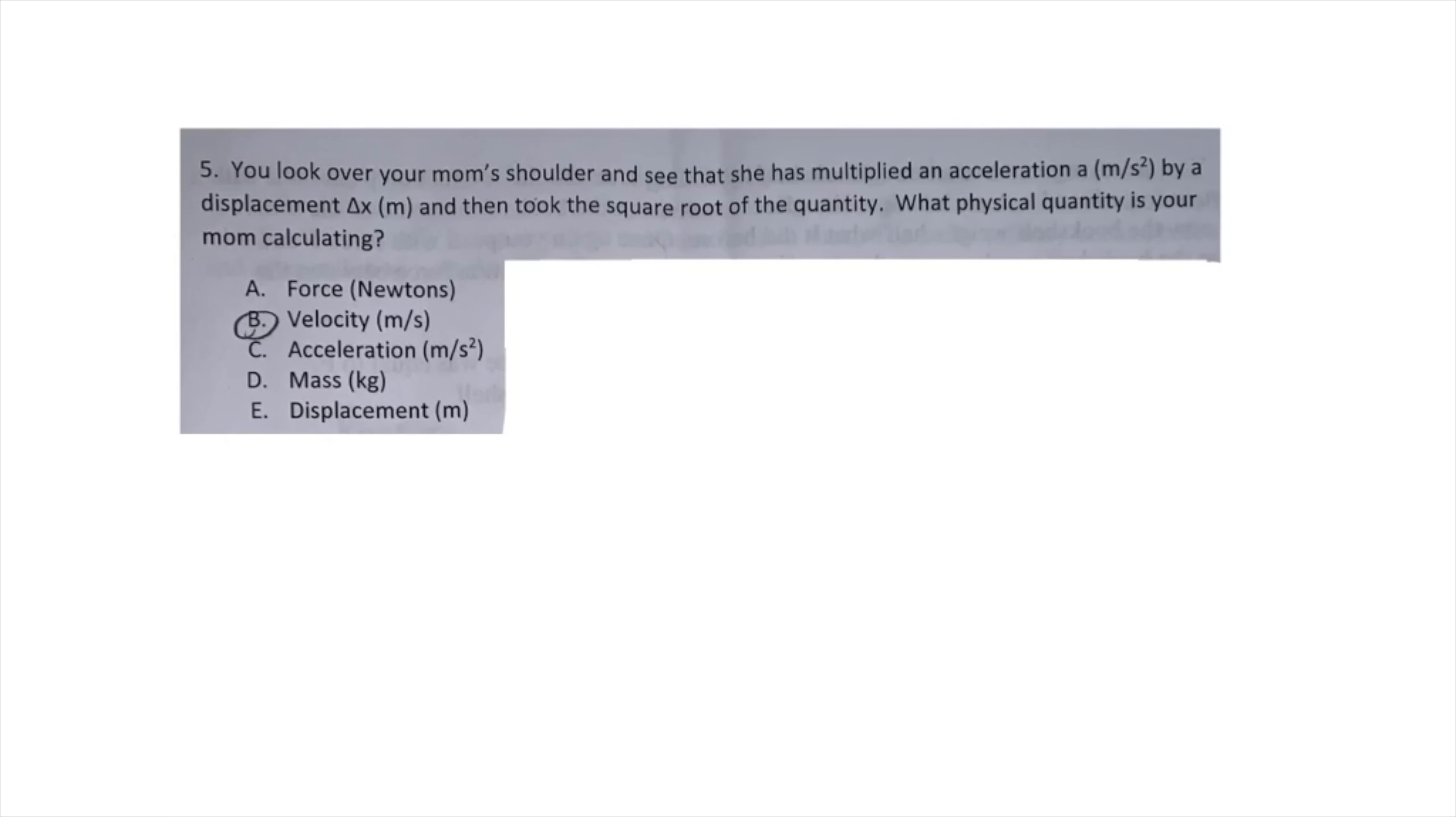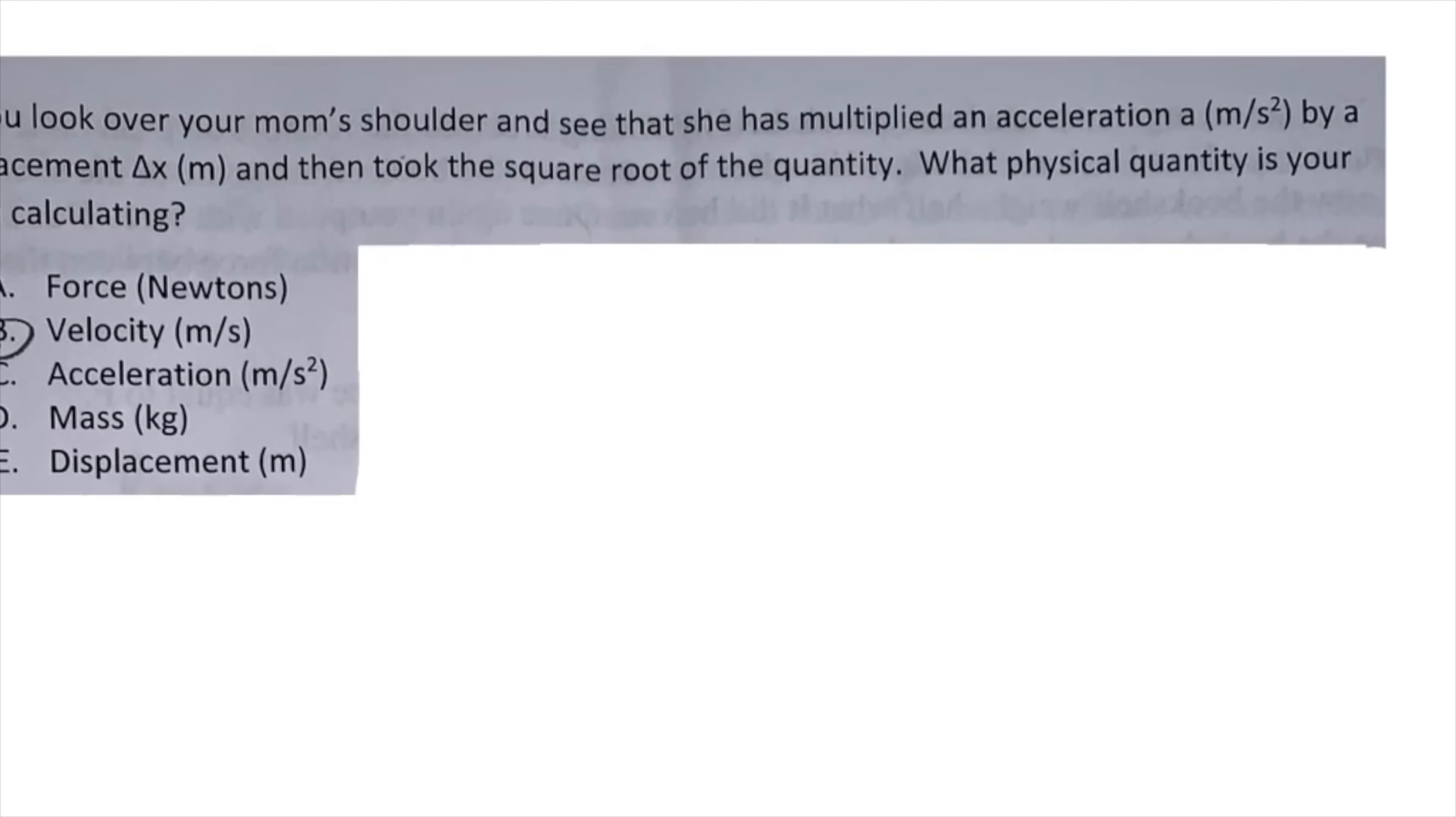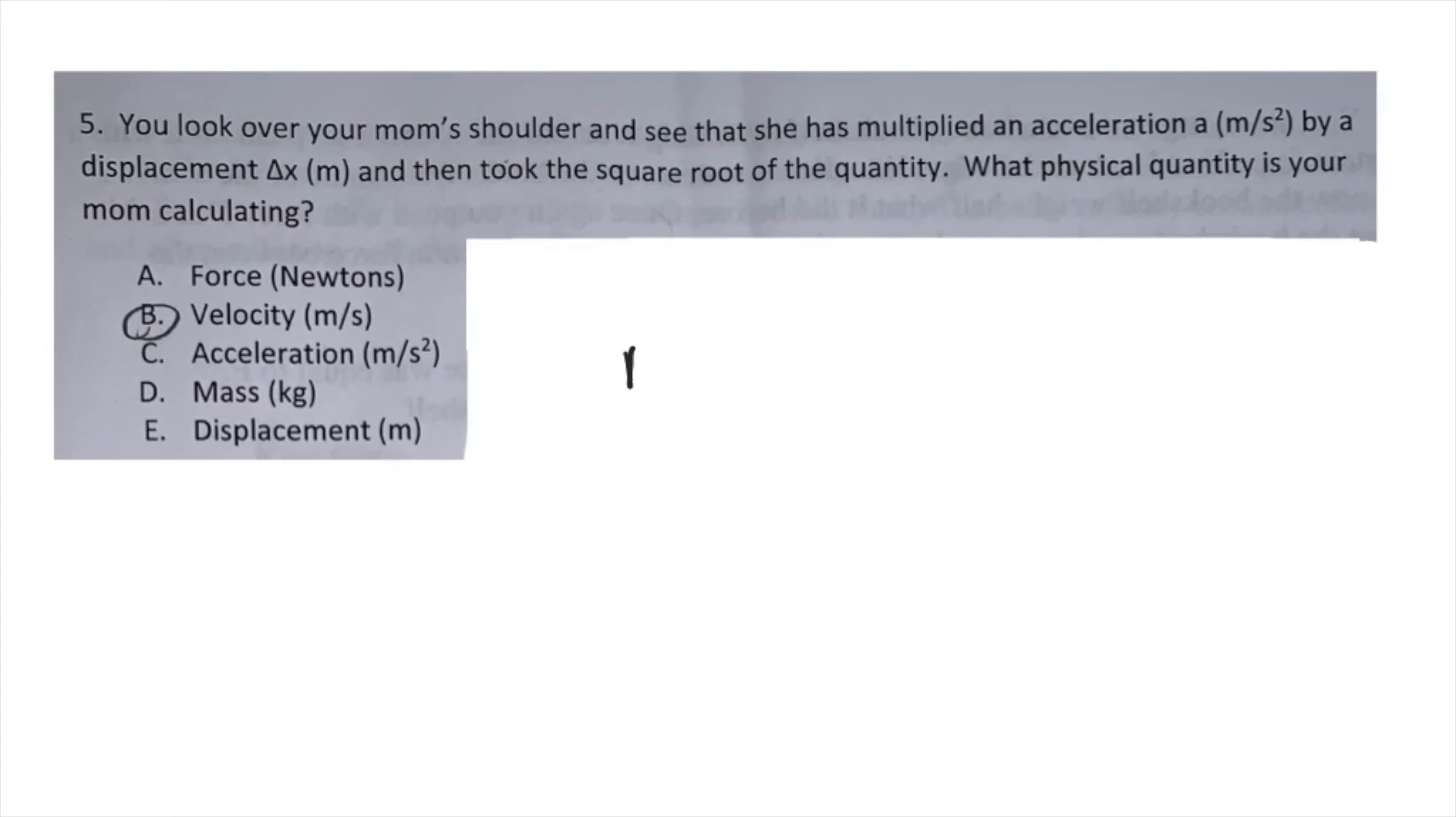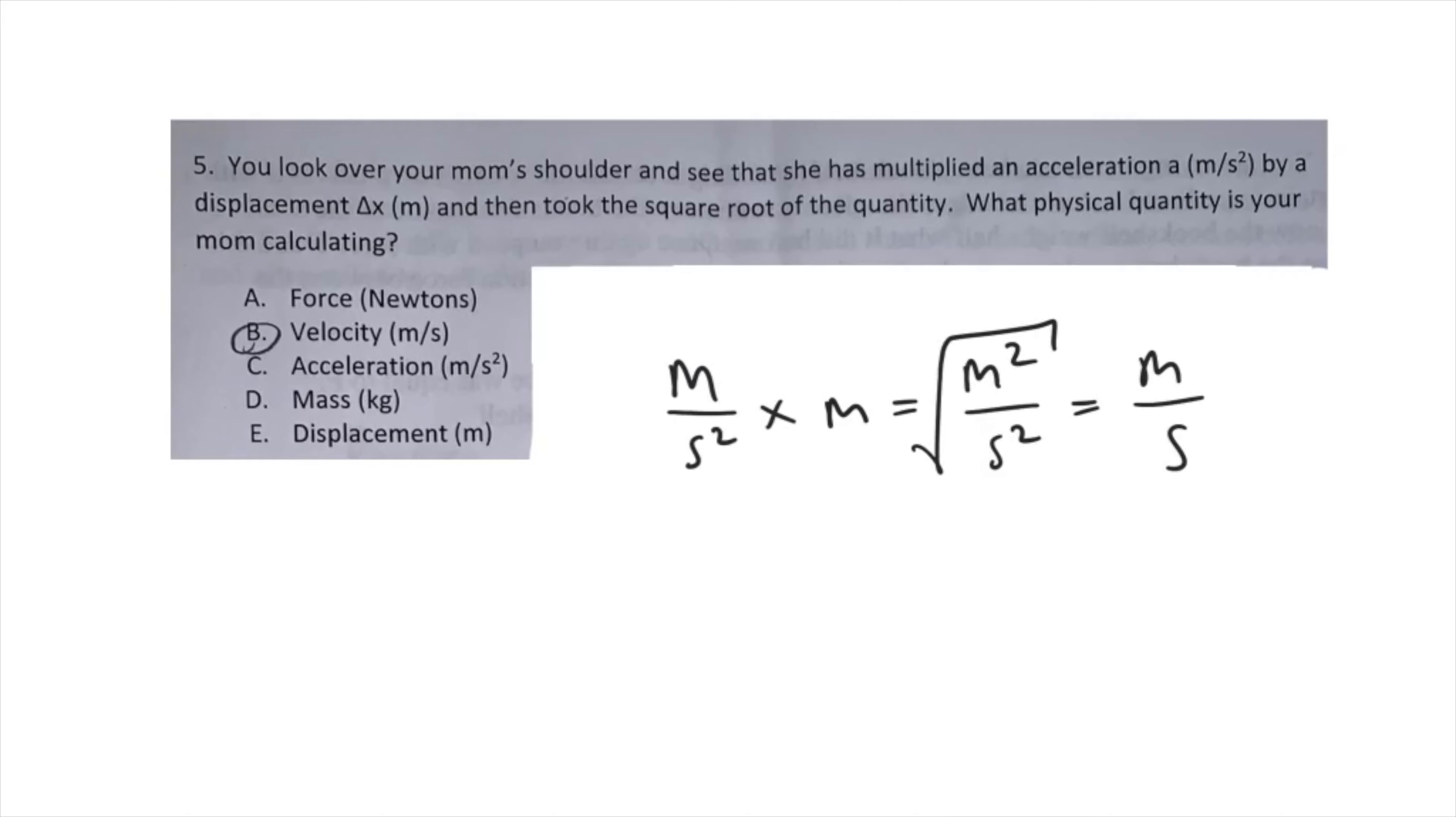Take a moment to read question five. This question is actually pretty easy. If you simply multiply the units of acceleration by displacement, you get meters per second squared times meters, which gives you meters squared over seconds squared. If you square root this whole quantity, you'll end up with meters per second, which is the unit for velocity.